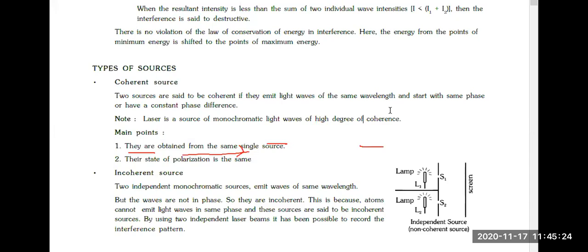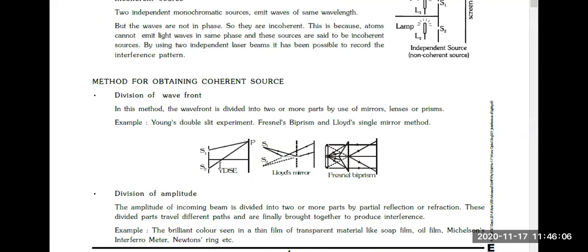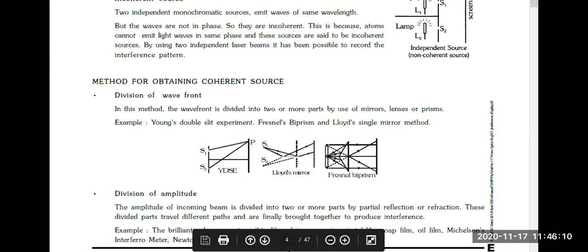Our syllabus limitation is that we study coherent sources. Because in waves, even if we have two different frequencies, the waves will superimpose — like standing waves and beat frequency — but that makes situations complex, so we won't discuss that. The methods to find a coherent source: first is YDSE, which we will be studying throughout the class. Second is Lloyds mirror. Third is Fresnel biprism. We won't study Lloyds and Fresnel biprism — just YDSE.